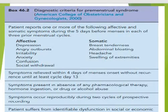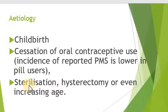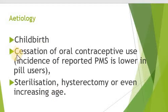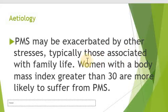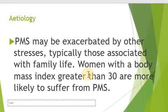Certain events are linked with the onset of PMS, like childbirth — after the birth of children, women often suffer from PMS. There may be cessation of oral contraceptives. If the patient has dysmenorrhea, infertility, has had a hysterectomy performed, or has increased age, this can also lead to induction of PMS. PMS is exacerbated by stress, especially associated with family life. If the patient is obese with a BMI greater than 30, she is more likely to suffer from PMS.